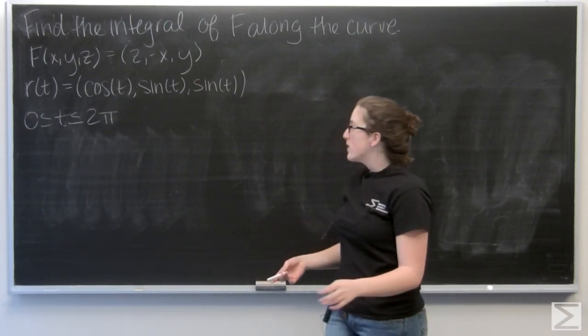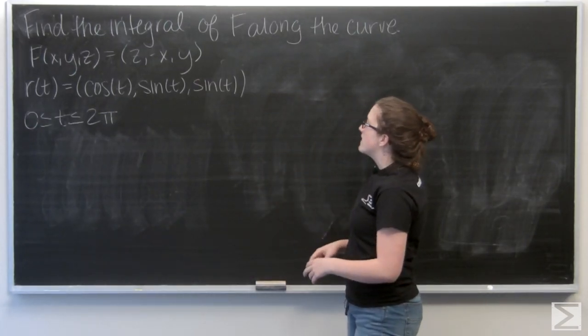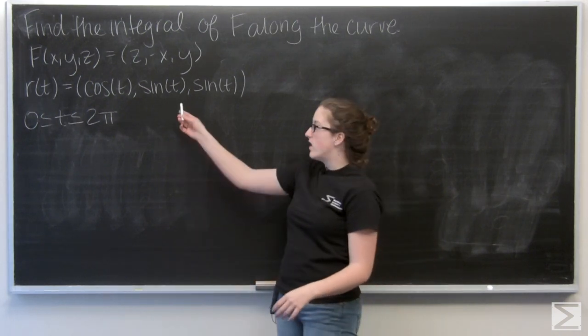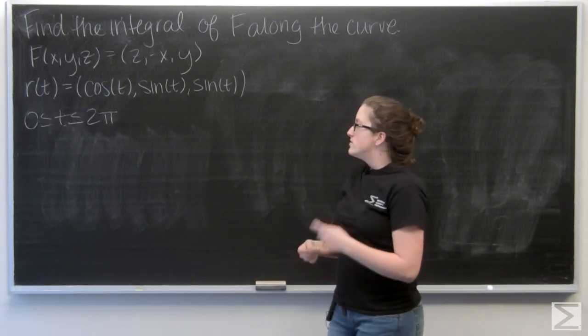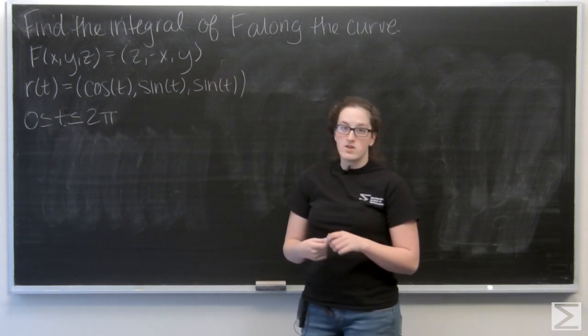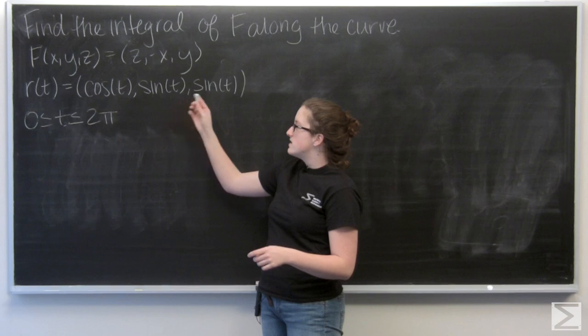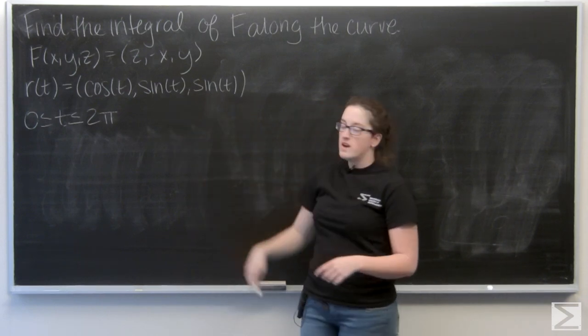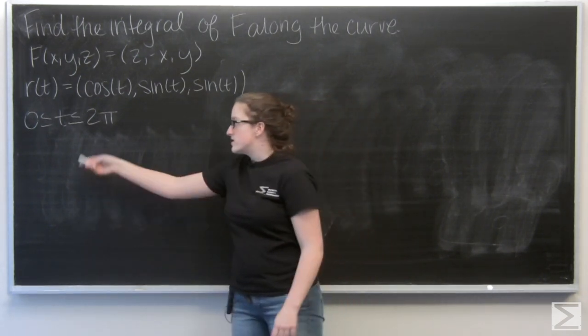Okay, so for this problem, I'm asked to find the integral of f along the curve given by r of t. So f is z, negative x, y, and r of t is cosine t, sine t, sine t. And I'm looking for t between 0 and 2 pi.